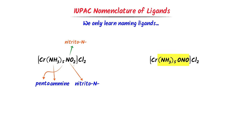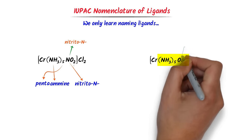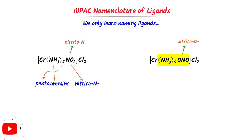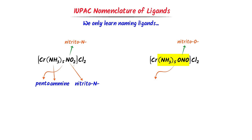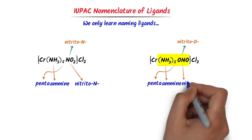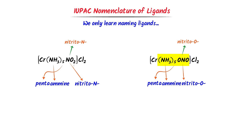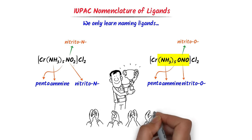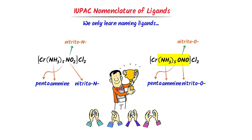Secondly, in this coordination compound, there are also two ligands: NH3 and NO. Remember that this NO is known as nitrito-O. According to alphabetical order, there are five molecules of NH3, so I write 'pentaamine'. For this NO, I write 'nitrito-O'. Thus I get 'pentaamine nitrito-O'. Therefore, using this simple method, we can easily name ligands of coordination compounds.